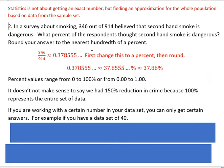The other thing I want to mention about percents is that percent values range from 0 to 100, or if you look at them as a decimal number, 0 to 1.00. It doesn't make any sense to say we had a 150% reduction in crime, because 100% represents the entire data set. So when we take it down by 100%, we're down to 0. We can't have a 150% reduction, and people say things like that sometimes — a 400% reduction or whatever. You can't do that.